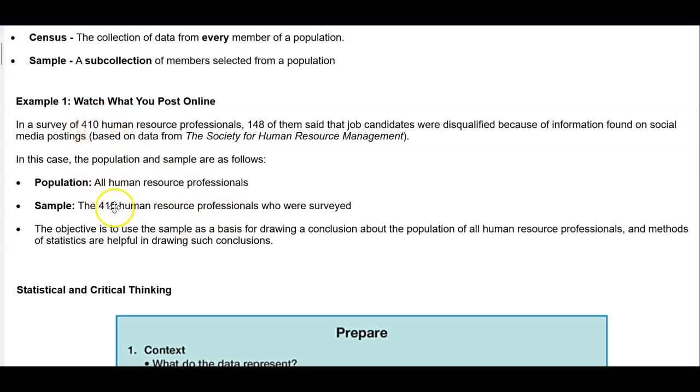The population would be all the human resource professionals. The sample is going to be the 410 human resource professionals who were surveyed. The objective is to use the sample as a basis for drawing a conclusion about the population of all human resource professionals, and methods of statistics are helpful in drawing such conclusions.